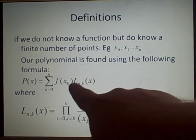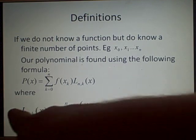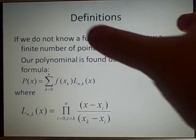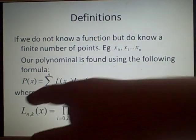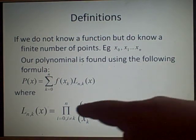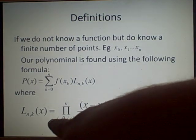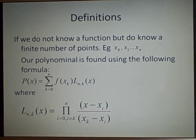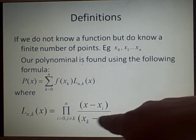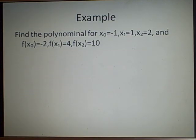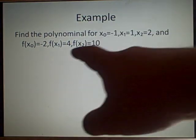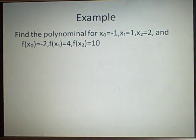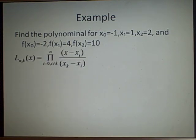We multiply by L_k(x), where n is the number of points. So if you have x0, x1, x2, then n is two because that's the highest index. L_k(x) is a product from i=0 where i is not equal to k, of (x minus x_i) over (x_k minus x_i). Now the example: find the polynomial for x0=-1, x1=1, x2=2, with function values -2, 4, 10.